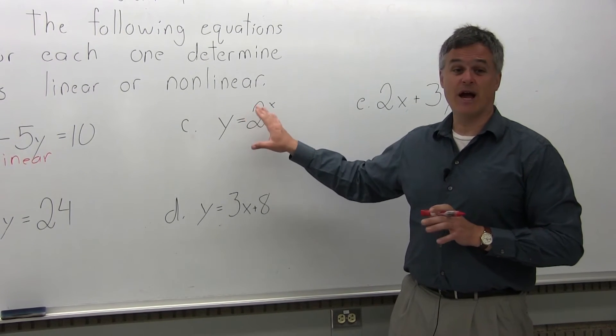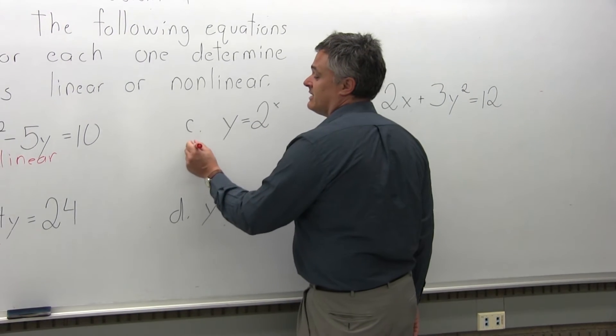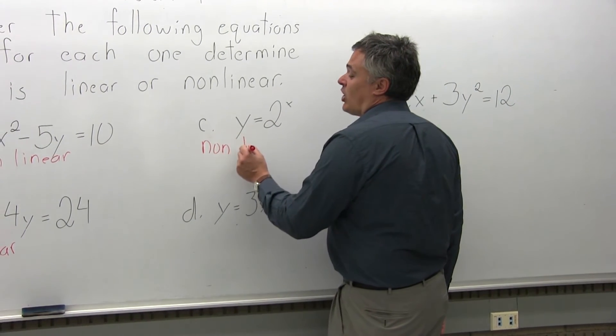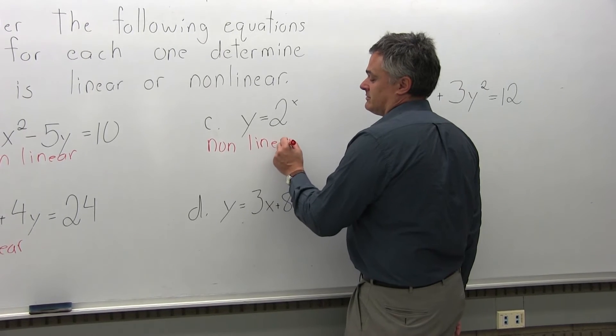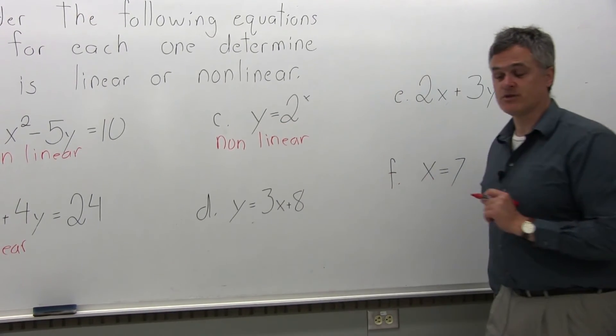This is an unusual graph. It is a curve. So the answer for part C is it is non-linear. If you draw the graph, it would curve. It's not a straight line.